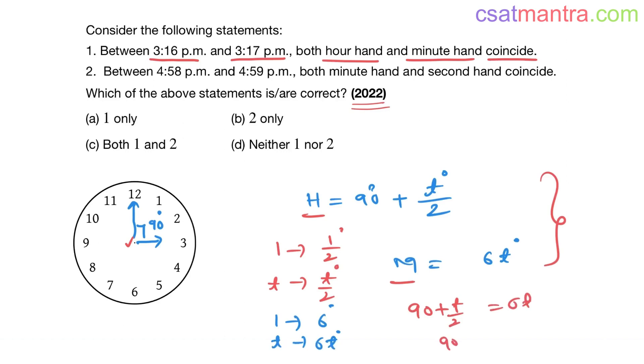Now 90 is equal to 6t minus t by 2. This is 12t minus t, 11t by 2. So 11t by 2 is equal to 90. T is equal to 180 by 11. So this is 11 ones are 11, 18 minus 11 is 7, 70, 11 sixes are 66, 40 is left, 11 threes are 33.